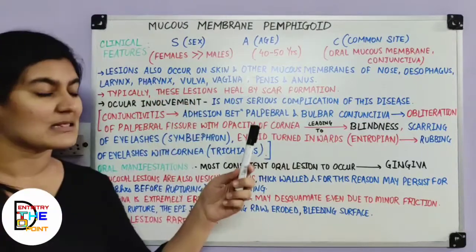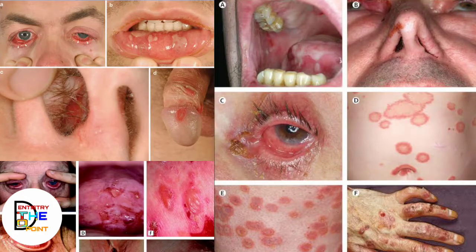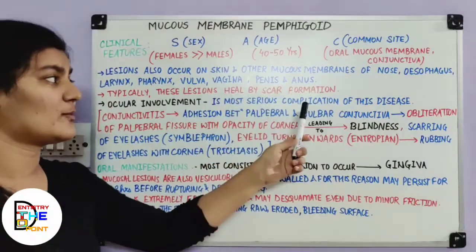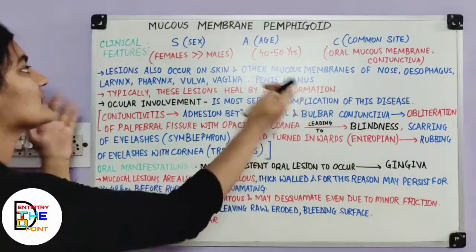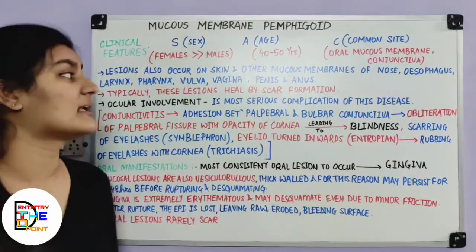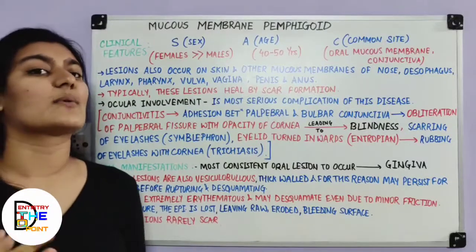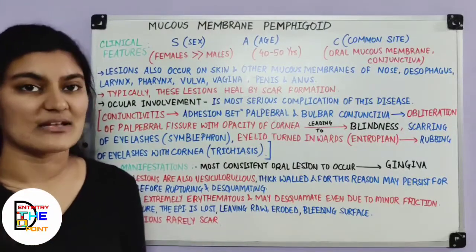Lesions also occur on skin and other mucous membranes including the nose, esophagus, larynx, pharynx, vulva, vagina, penis, and anus. Typically, cutaneous lesions heal by scar formation, which is why it is known as cicatricial pemphigoid.